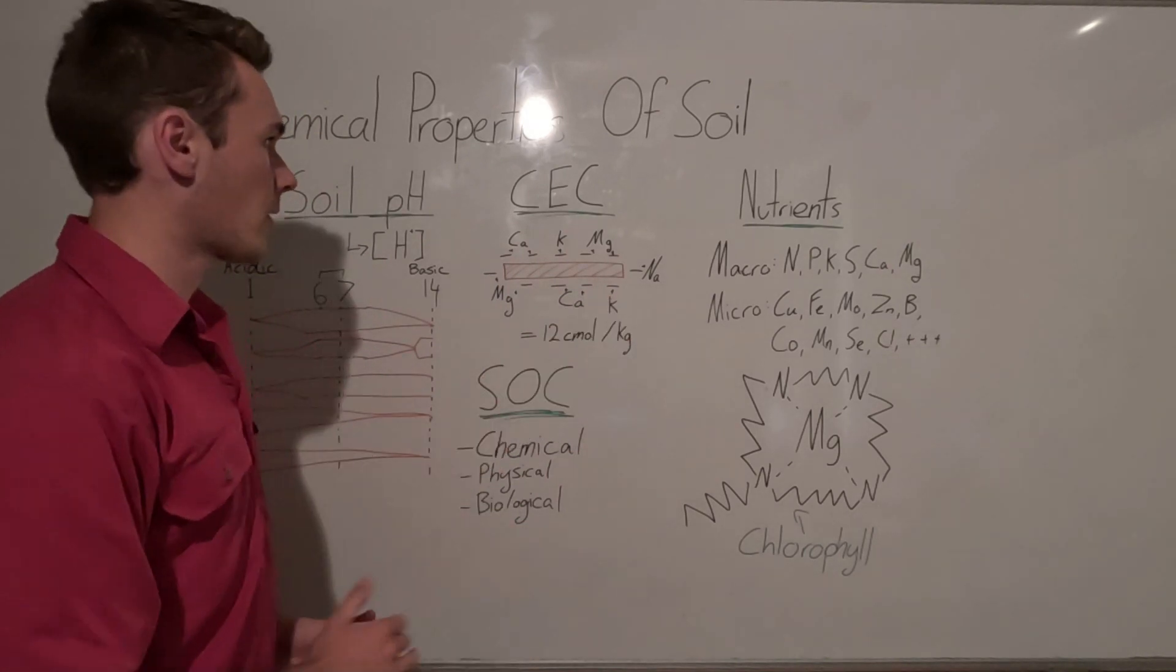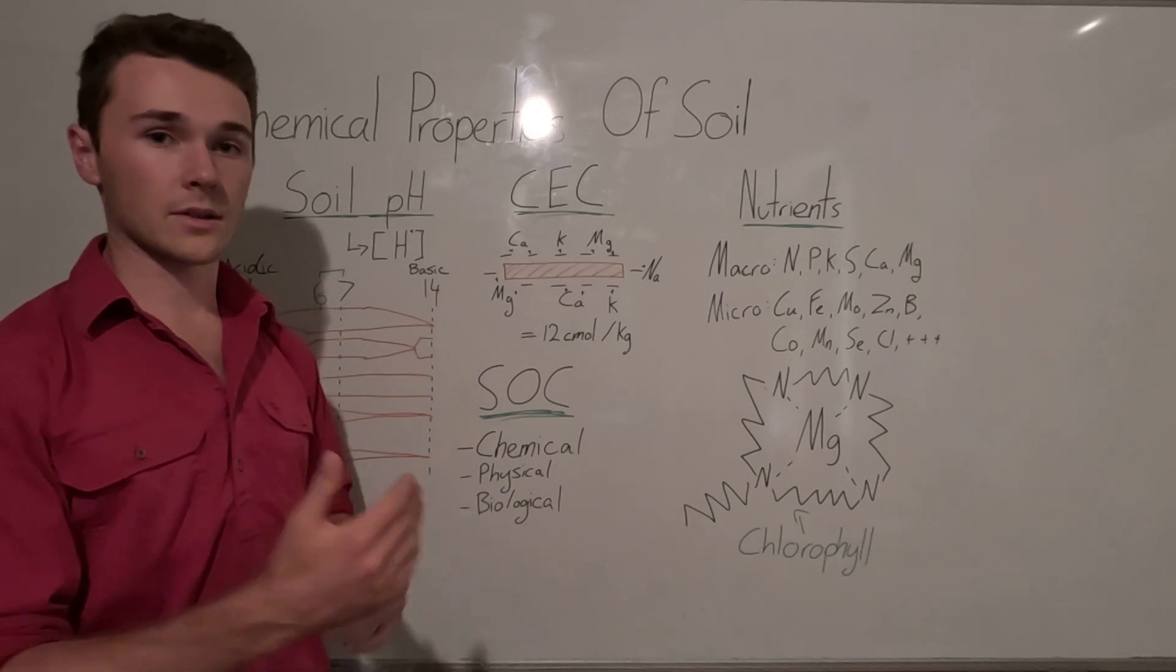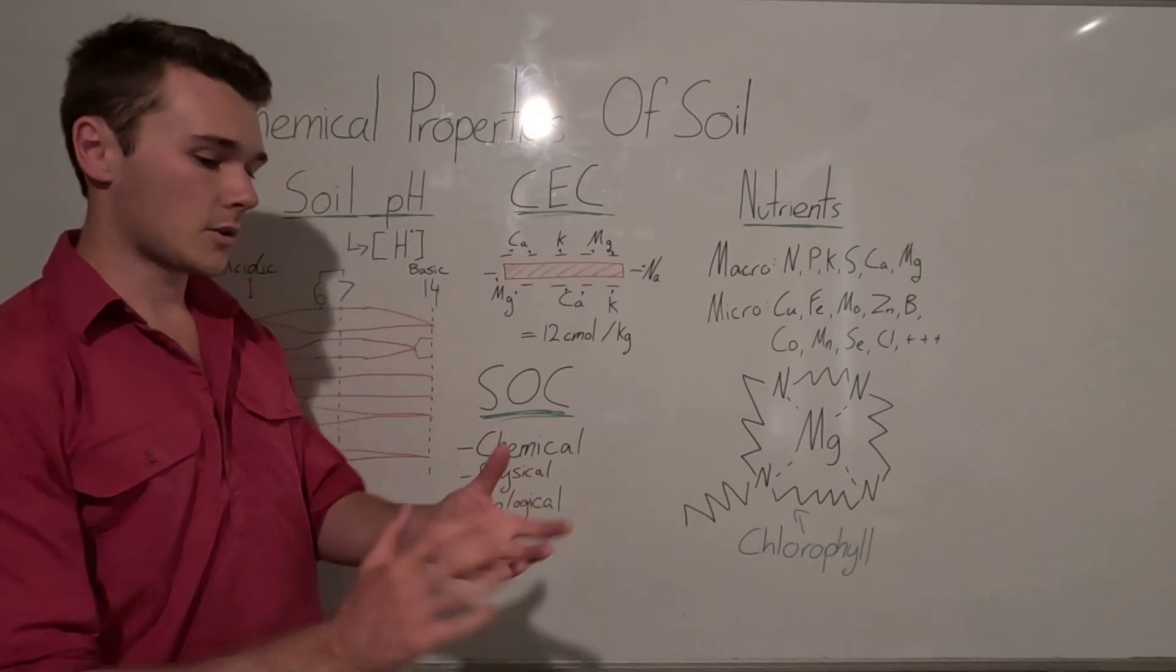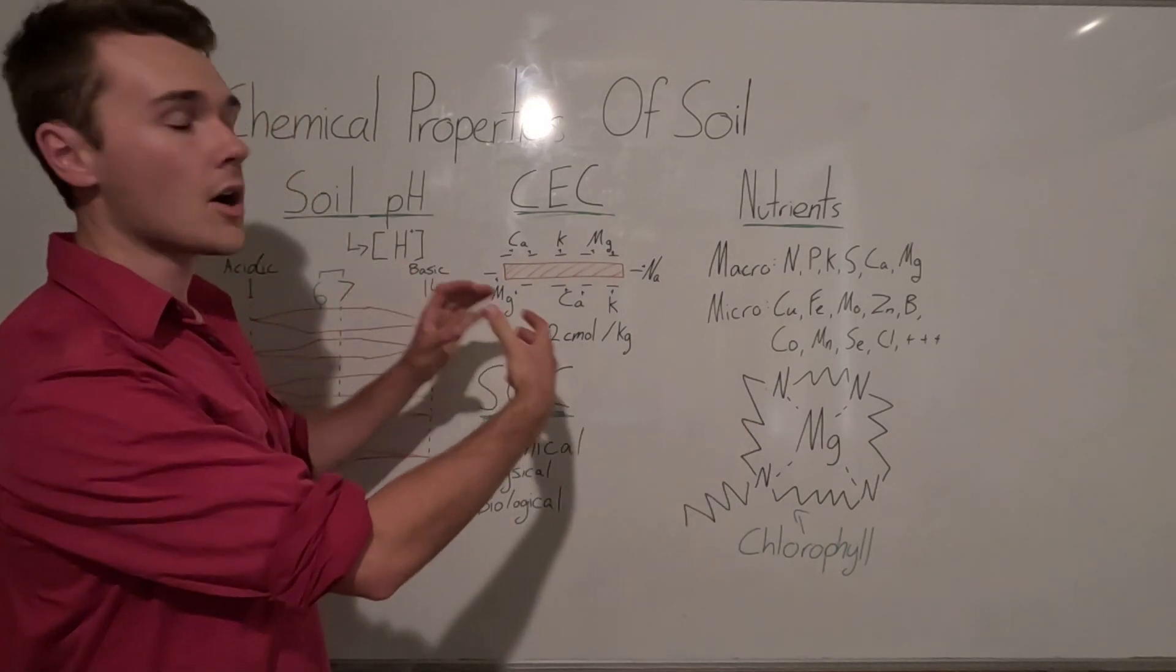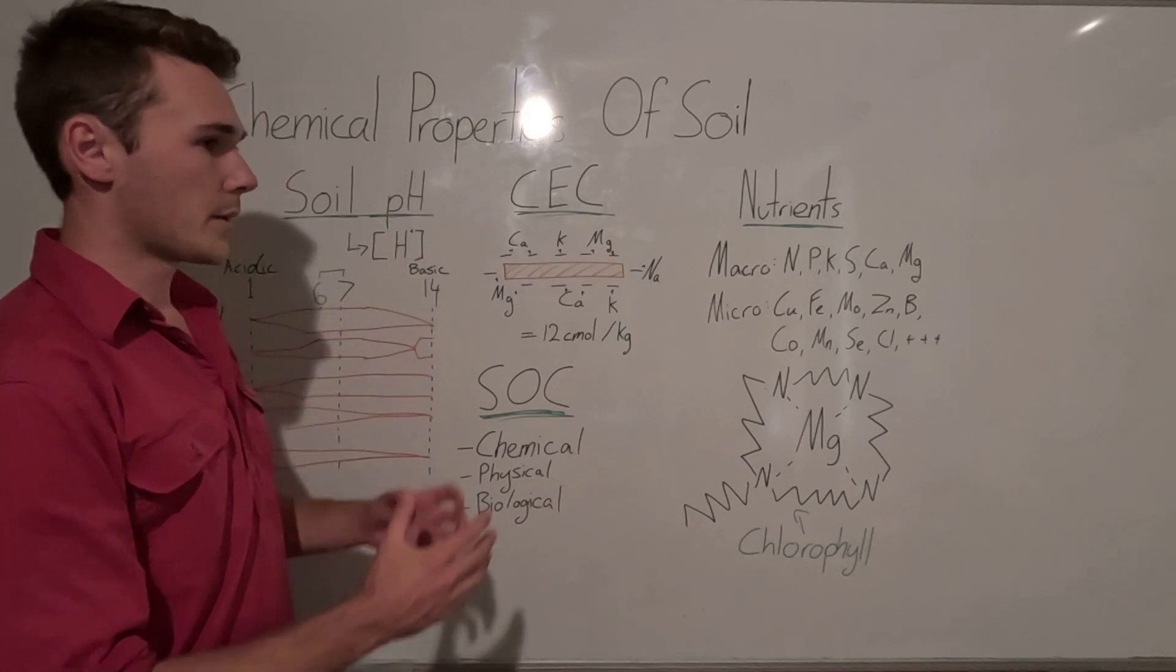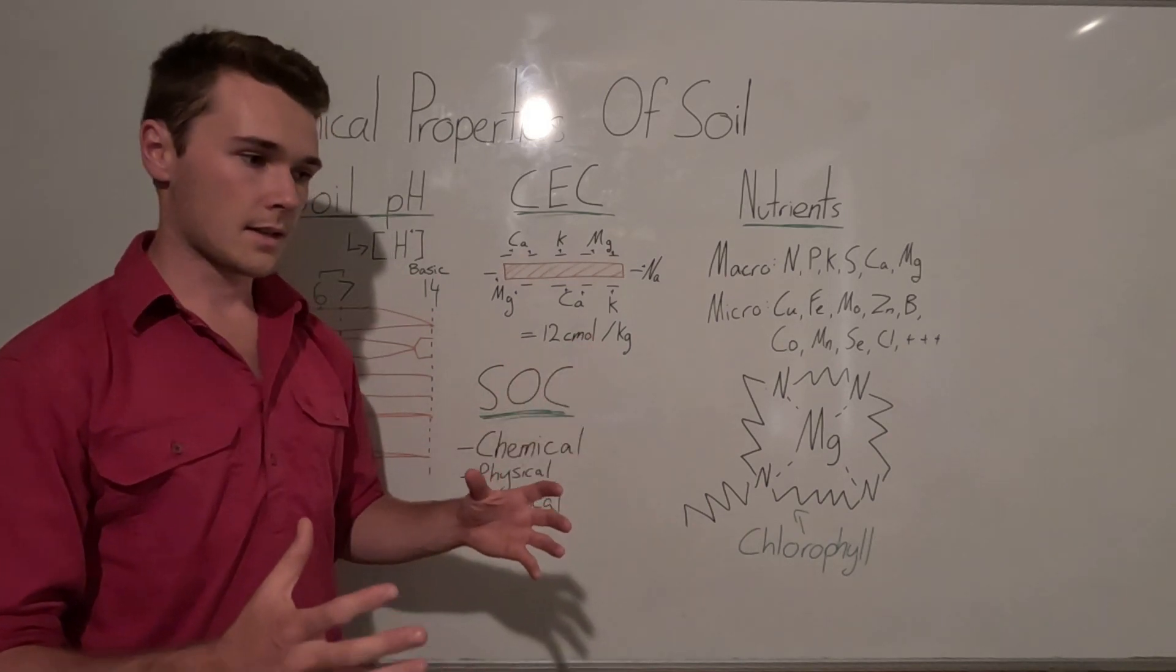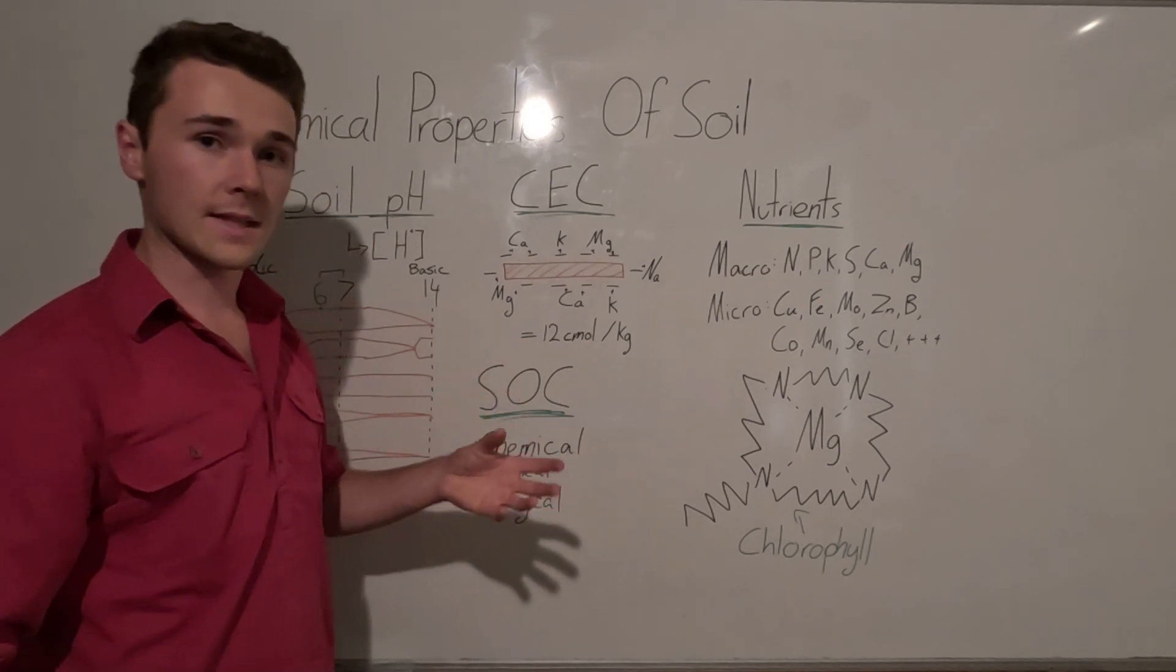And so the way our cation exchange capacity works is that we have a negatively charged particle in our soil called a colloid. And this colloid, as I said, has a negative charge to it, and so it's going to attract these positively charged ions, or they're called cations.